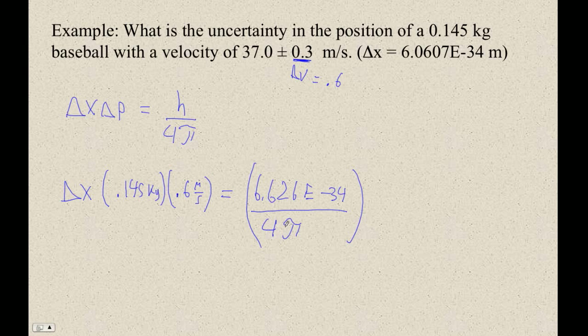So 6.626 E minus 34 times 0.145 times 0.6. What am I doing? So divided by 4, divided by pi. So 6.626 divided by 4, divided by pi, and then divided by 0.145, divided by 0.6. So I'm going to divide by this. And I get 6.066 times 10 to the minus 34th meters. So yeah, so that's basically 0. That's smaller than the smallest thing by many orders of magnitude. Like the nucleus of an atom is 10 to the minus 15th, for example.